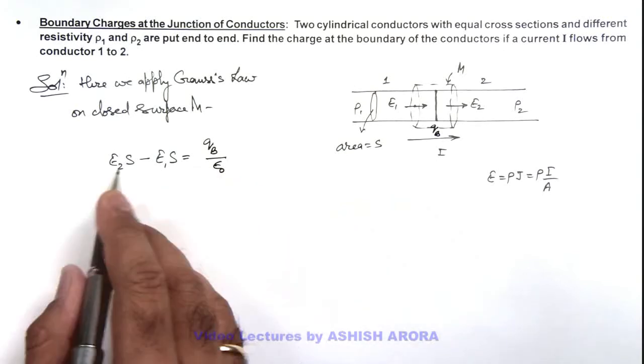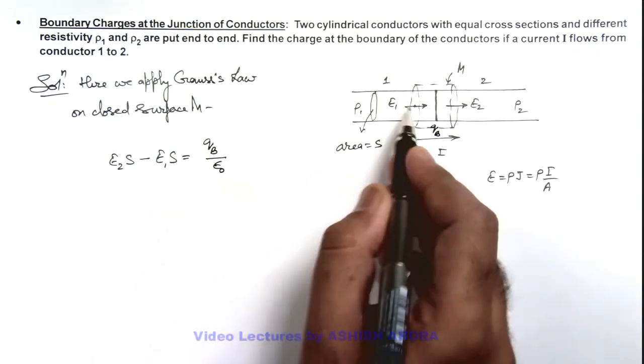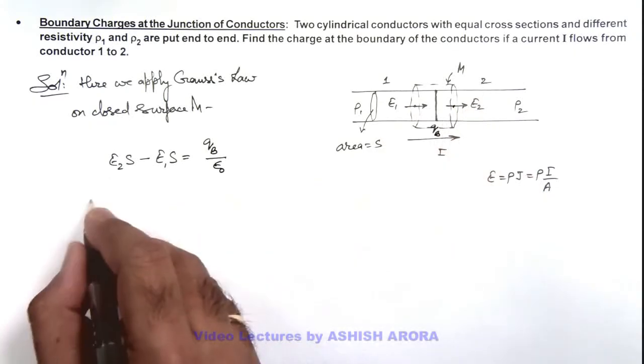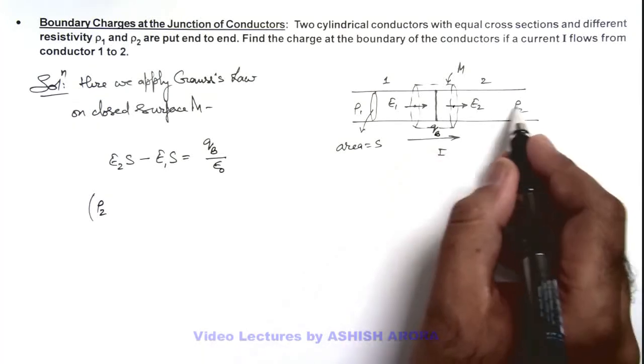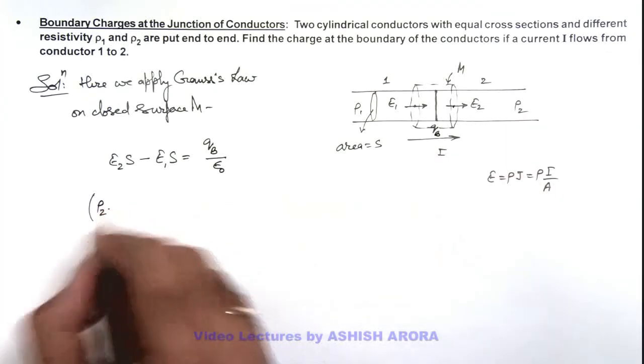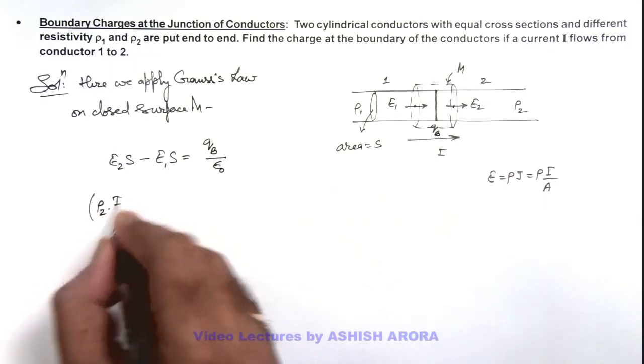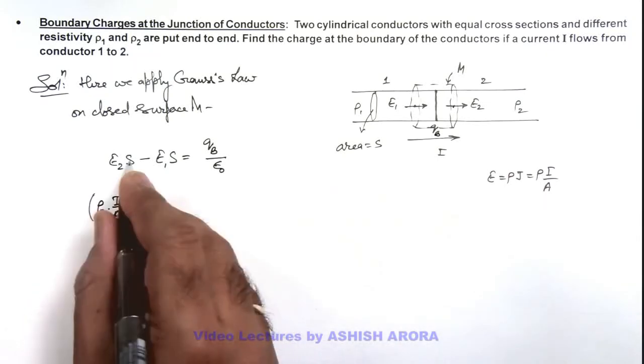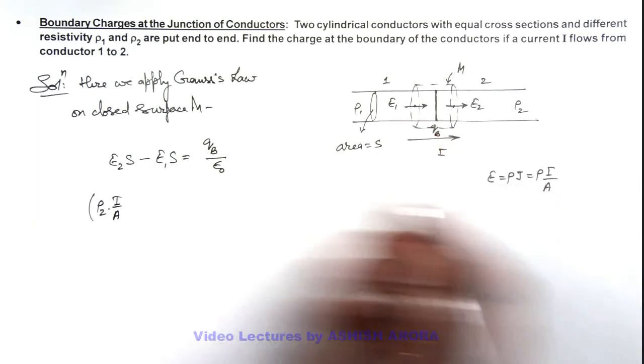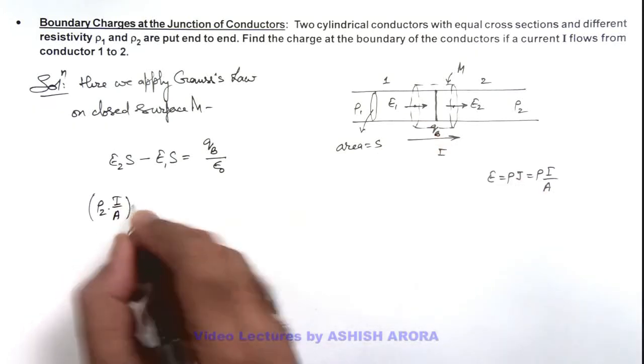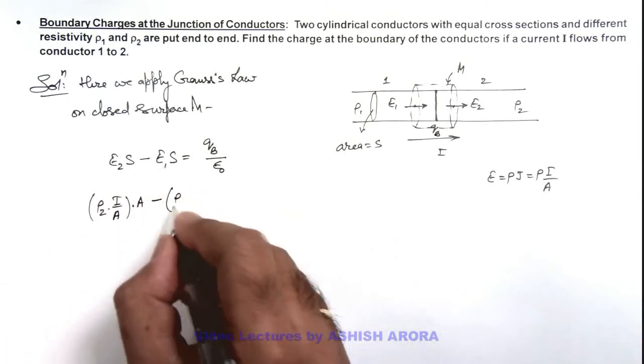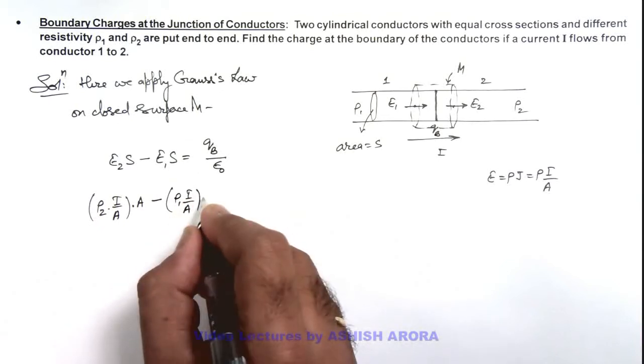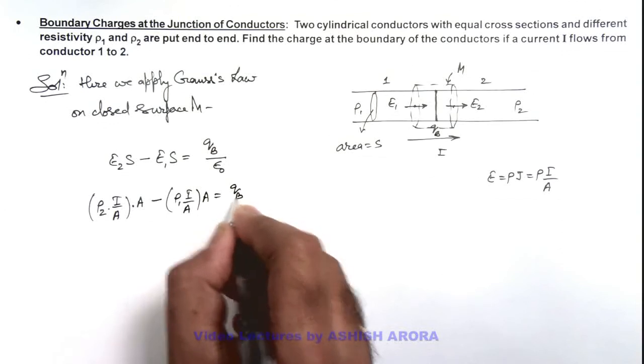In this situation, the value of electric field E₂: the electric field in conductor 2 we can write as resistivity ρ₂ multiplied by the current density, that is i/A. Here I am taking A or S as the same. Multiplied by S, I can substitute as A. Minus E₁ I can substitute as ρ₁ multiplied by current density, this is again i/A, and here it is multiplied by A. That is equal to qb by ε₀.